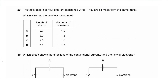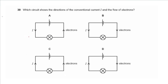Question 29 describes four different resistance wires all made from the same metal. Which wire has the smallest resistance? That would be the shortest length and the widest diameter or cross-sectional area — 1.5, and the answer is B.